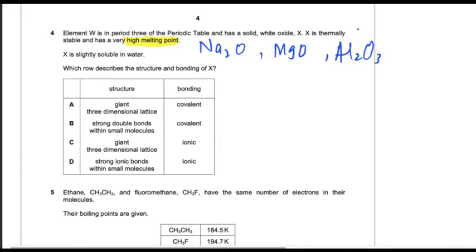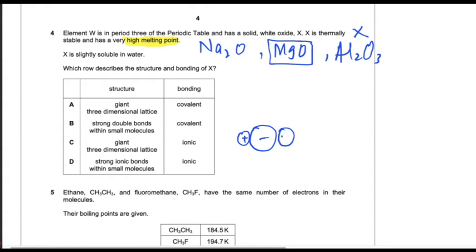X is slightly soluble in water. Aluminum oxide is completely insoluble and Na2O is completely soluble in water. The option left is magnesium oxide. Magnesium oxide is an ionic compound with a giant three-dimensional lattice. All ionic compounds have a giant structure, meaning you are unable to count the number of particles. Lattice means there is a regular arrangement of positive and negative ions, arranged in three dimensions along the x, y, and z axes.